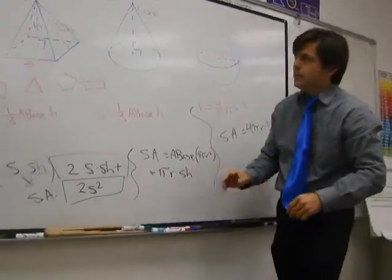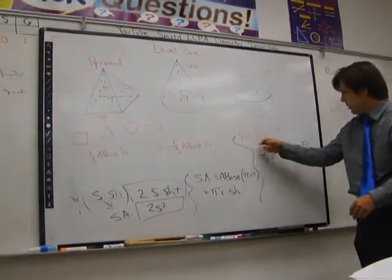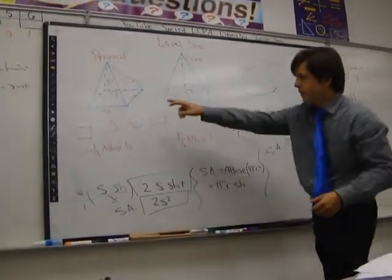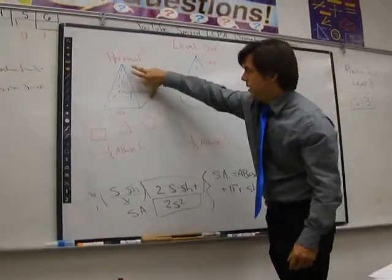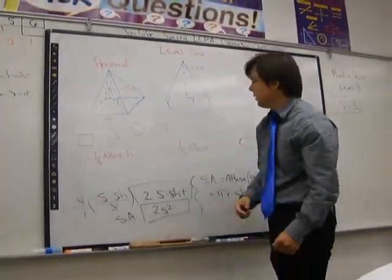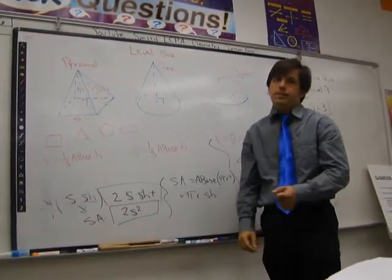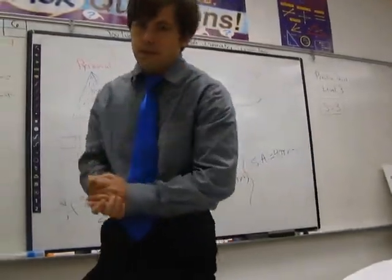So level one is going to be basically just to identify the formulas and to match the nets for these, which is really simple. And to identify slant height, height, side length. Level two is going to be solving some problems by plugging in. Should be pretty simple. Good luck. See you Tuesday.